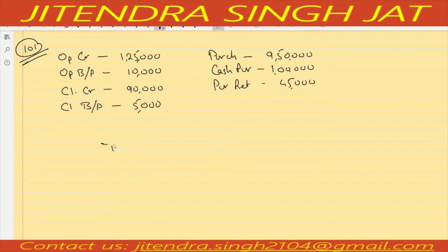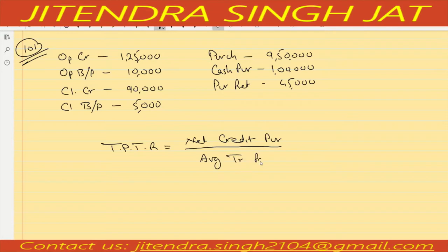Trade payable turnover ratio formula is net credit purchase upon average trade payable. Net credit purchase we can calculate by subtracting purchase return and cash purchase from total purchase. So: 9 lakh 50,000 minus 1 lakh equals 8 lakh 50,000, minus 45,000 equals 8 lakh 5,000. That is the net credit purchase.